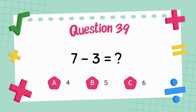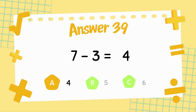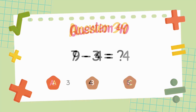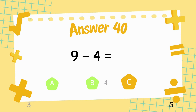What is 7 minus 3? The answer is 3. What is 9 minus 4? The answer is 5.